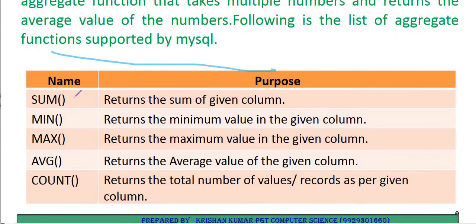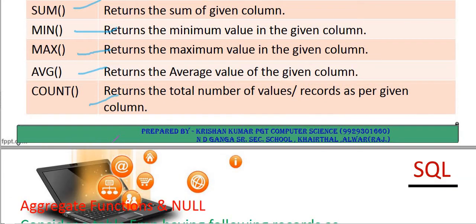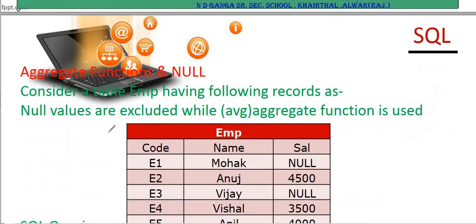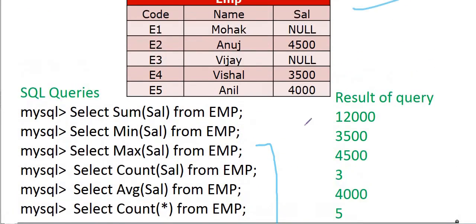The following aggregate functions are supported by MySQL: SUM returns the sum of a given column, MIN finds the minimum value in a given column, MAX returns the maximum value of a given column, COUNT returns the total number of values in a given column. For example: SELECT SUM(sal) FROM emp — this gives the total salary sum from the emp table.